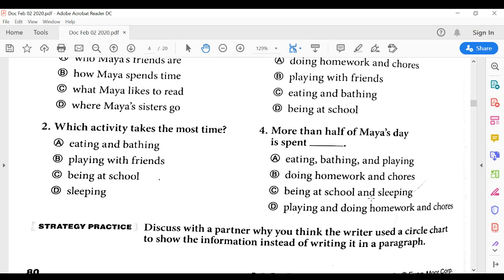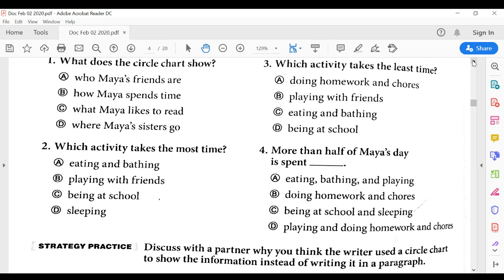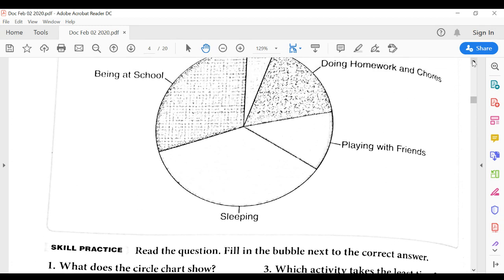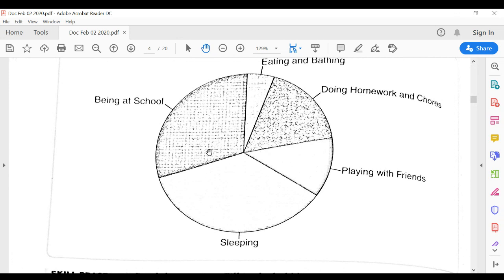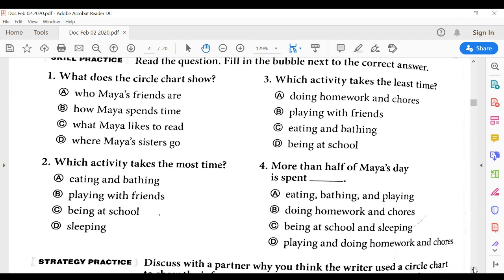C. being at school and sleeping, and D. playing and doing homework and chores. Remember what half means, that's kind of a math question. Half the circle would be one half and then another half. So they want to know which two activities together would be more than half, so you'll have to take a look at how much space they would take up there.